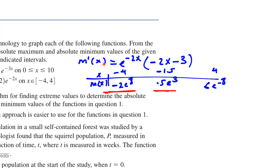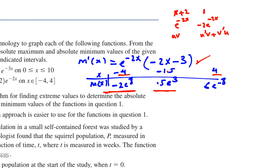Using the product rule: the derivative of the first function (x+2) is 1, and the derivative of the second function e^(-2x) is -2e^(-2x). Applying the product rule — derivative of first times second, plus derivative of second times first — we get m'(x) = e^(-2x)(−2x − 3).